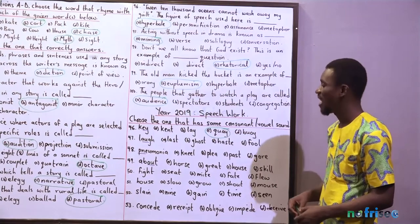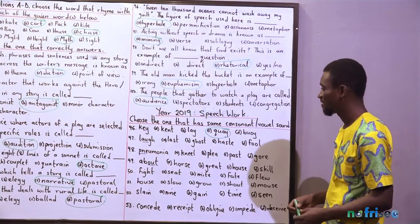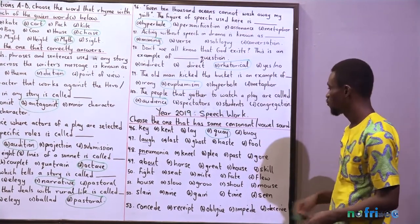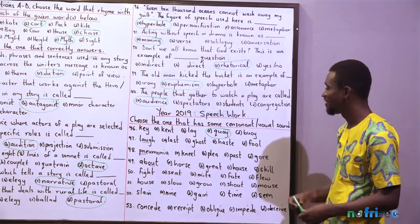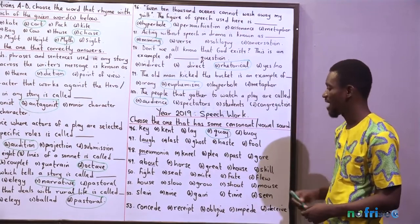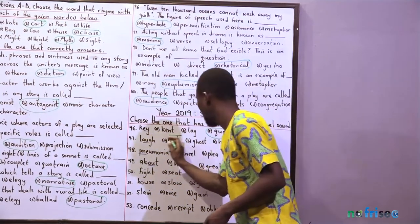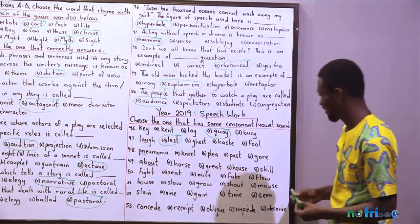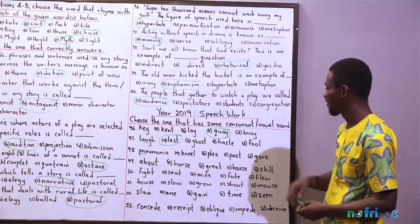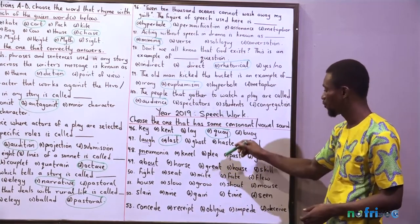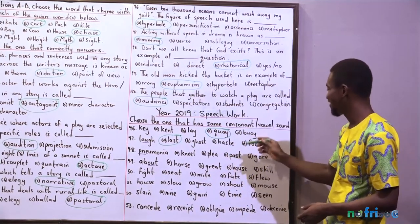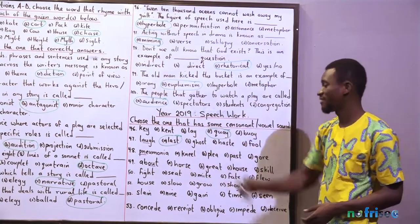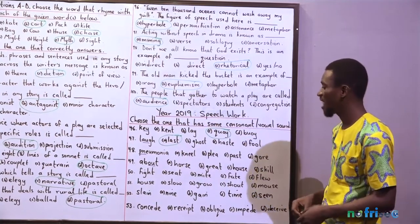Question 47 — 'laugh.' That's the /ɑː/ sound. Which option has the /ɑː/ sound? That's option A — 'last.' Option B, 'ghost,' is /əʊ/. Option C, 'ace,' is /eɪ/. Option D is /uː/. So 'last' is the one that has the same /ɑː/ sound as 'laugh.'